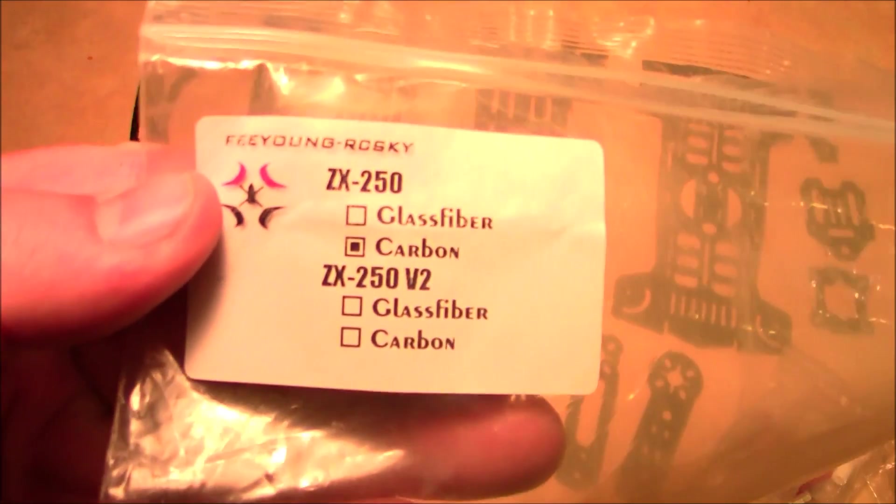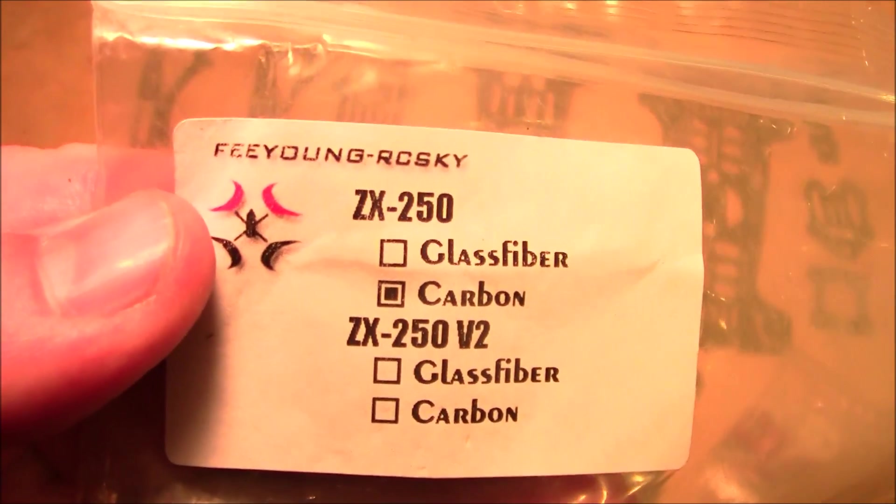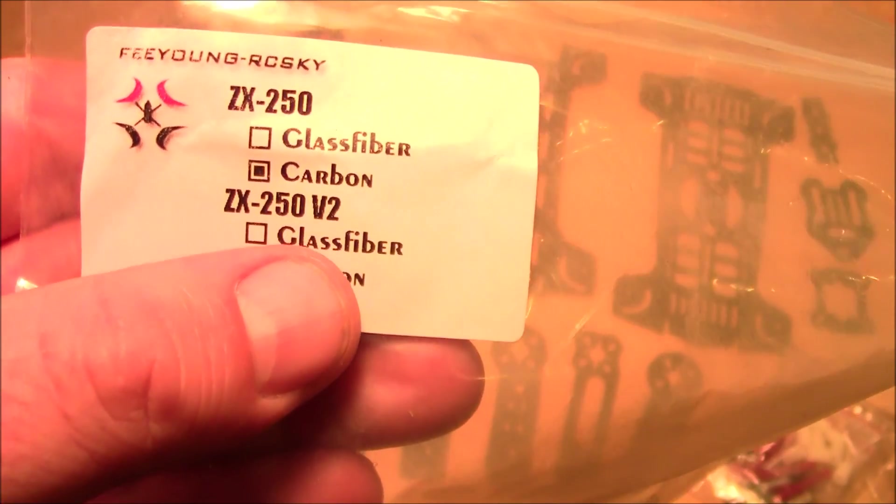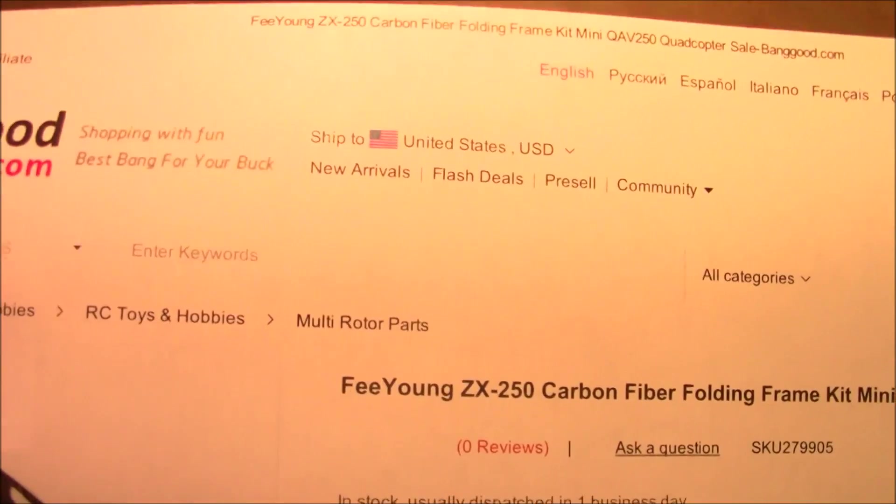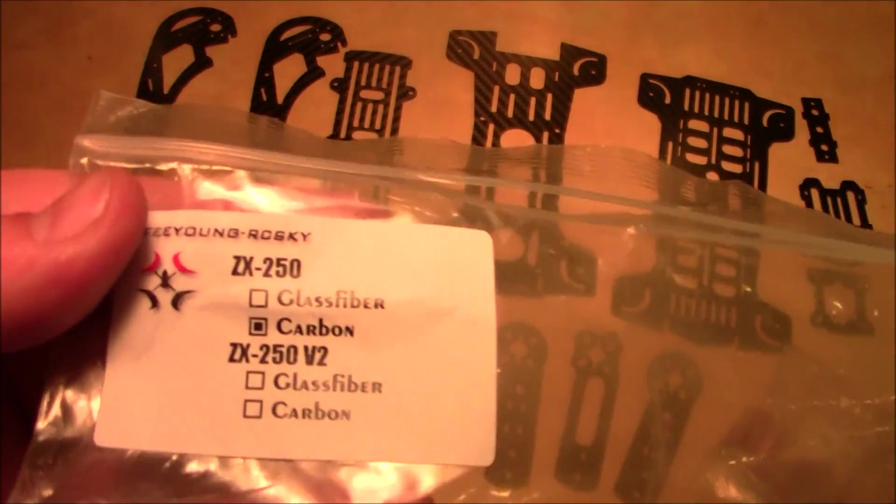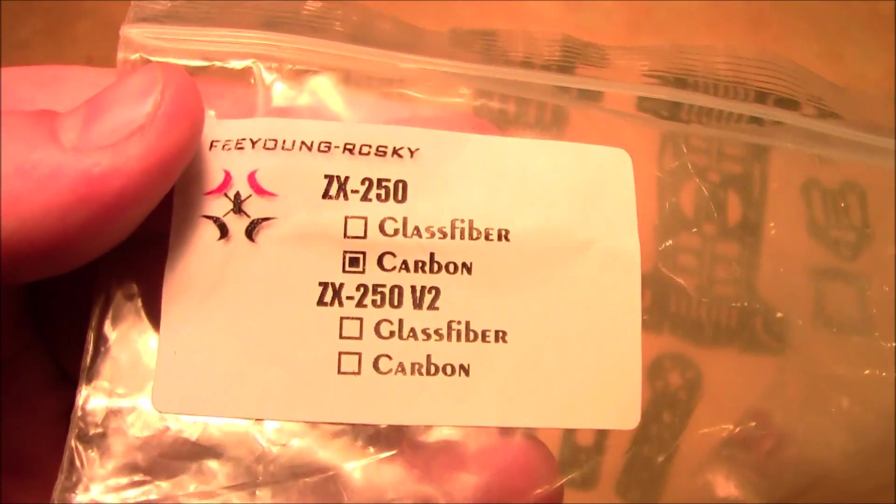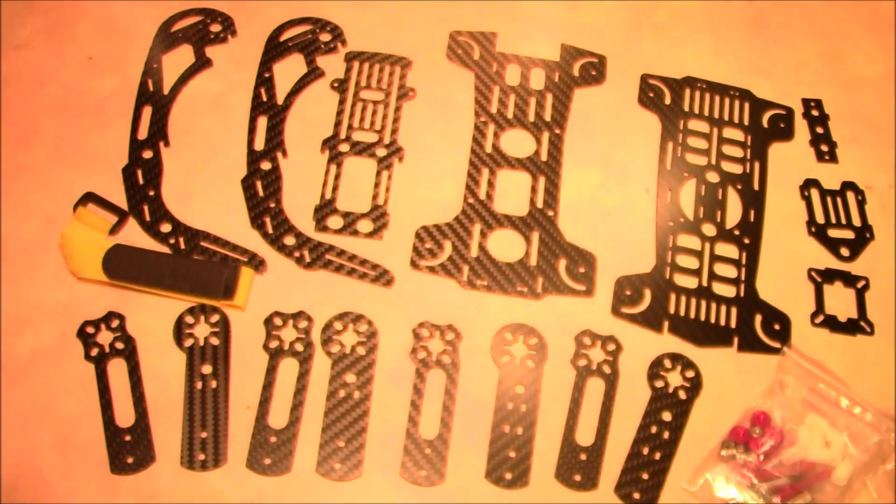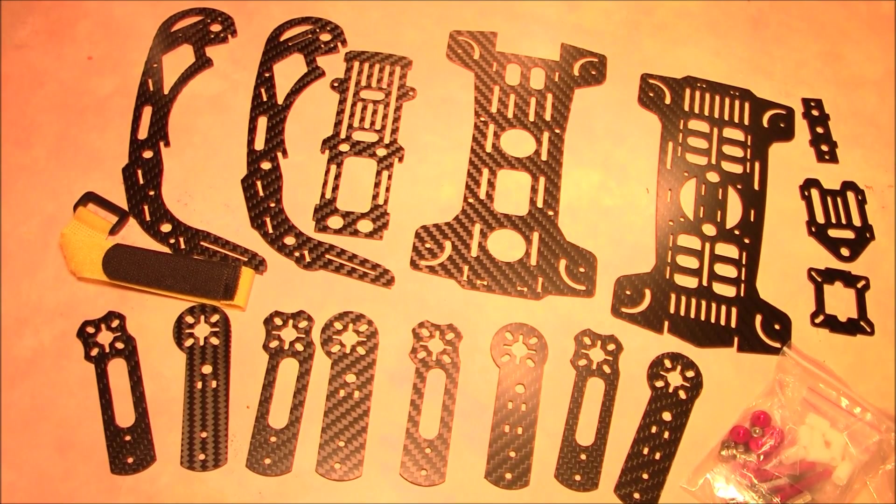So here on the bag it says Fihong RC Sky ZX250 carbon, but there's also what looks like a ZX250 V2. I would guess this is the V1 since it doesn't say V2 on here. I haven't seen the V2 for sale, so it's kind of odd that they have this. Anyway, these are all the parts that are included inside of it.